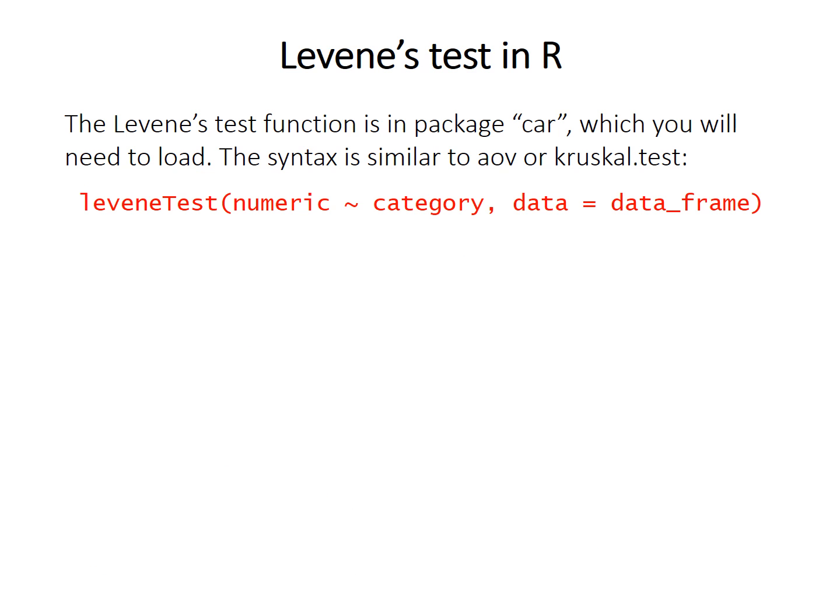To run Levene's test, you'll need an additional R package called car. If you haven't used packages before, you can find information online about how to load them into your R session. The leveneTest function has the same syntax as aov for ANOVA or the kruskal.test function. You write a formula with the numeric data column as a function of the tilde symbol and the column containing the categorical grouping factors, and you specify the name of the data frame with the data equals command.